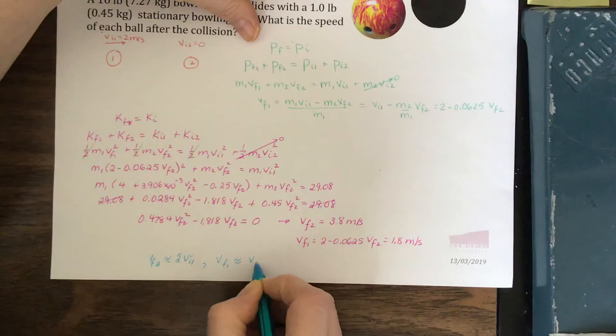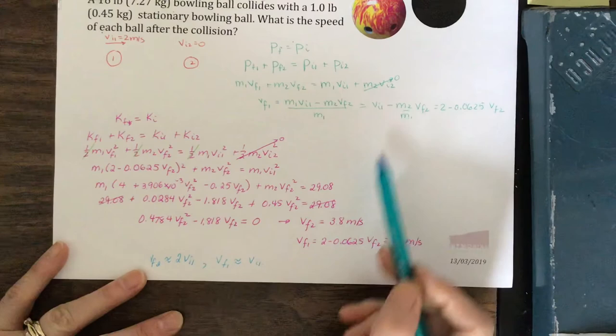If you wanted to, you could do this problem with just symbols and then look at the relationships. What do we get for exact values as m1 gets much, much bigger than m2? That might be an interesting problem to work on, too.